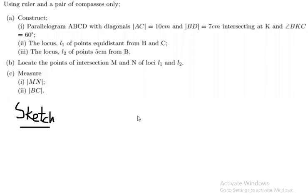Hi, in this video I'm going to construct the question given to you guys on Friday for a weekly quiz. Here's the question: using a ruler and a pair of compasses only, construct parallelogram ABCD with diagonals AC equals 10 centimeters, BD equals 7 centimeters, intersecting at K, and angle BKC equals 60 degrees.